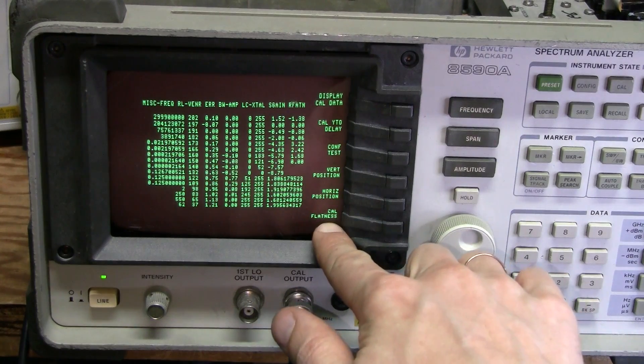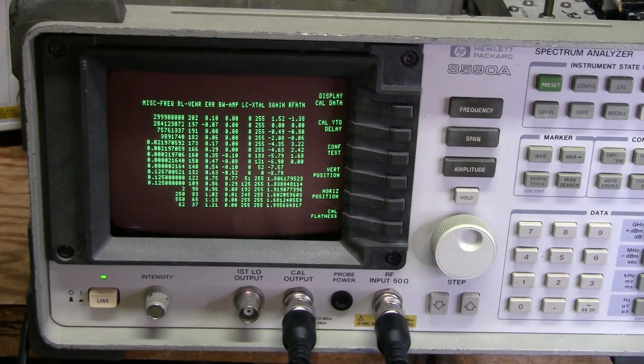And there are a few parameters which are not calibrated automatically. For example, this flatness should be entered manually. There are a few numbers there. And I suspect they are measured at the factory for a particular hardware. And I wish I knew how to measure these parameters again and how to adjust them properly.